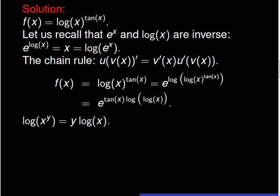In sum, we express f of x as the exponential of the logarithm of logarithm of x to the power tangent of x. Using the properties of the exponential and the logarithm, it comes that f of x equals the exponential of tangent of x times logarithm of logarithm of x. We are using the fact that the logarithm of x to the power y is equal to y times the logarithm of x.